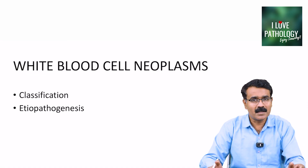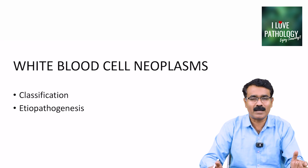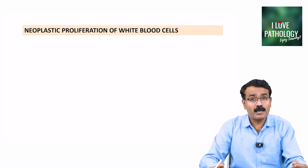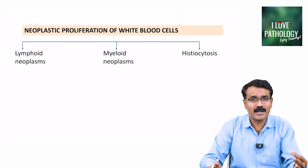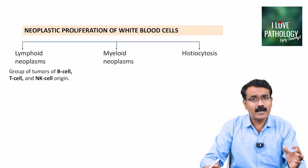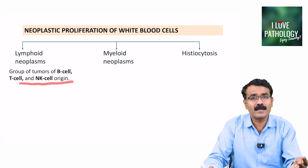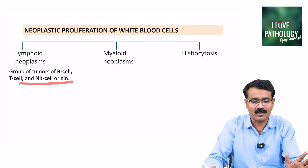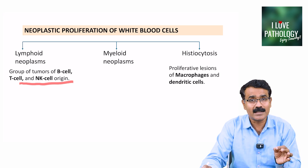In this session, let us learn about the classification of white blood cell neoplasms and etiopathogenesis in general. Neoplastic proliferation of white blood cells is broadly categorized into lymphoid neoplasms, myeloid neoplasms, and histiocytosis. The lymphoid neoplasms are tumors of B cell, T cell, and NK cell origin, whereas histiocytosis are proliferative lesions of macrophages and dendritic cells.